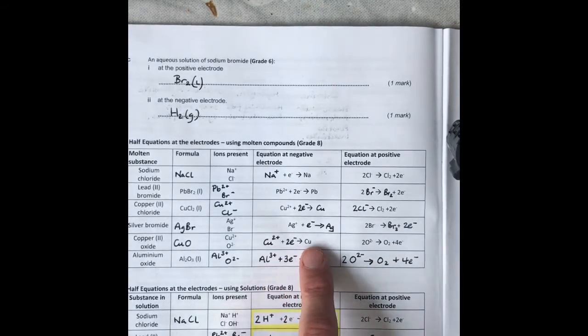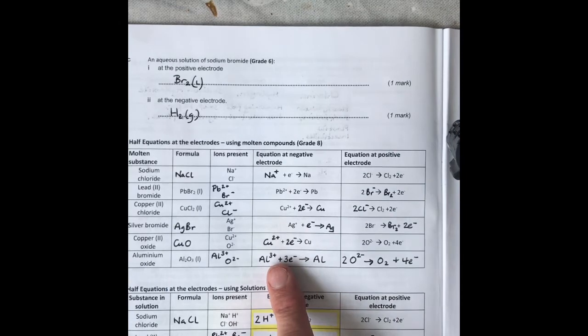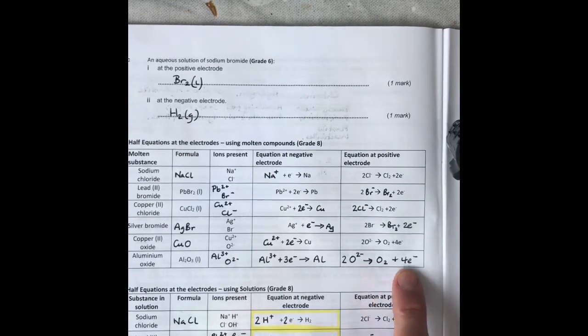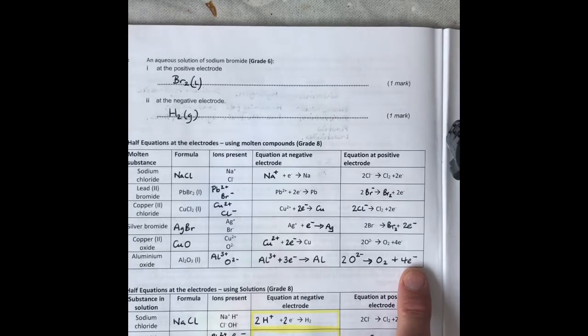Copper gains two electrons to become copper, and aluminum gains three electrons to become aluminum metal. Oxygen ions form oxygen gas and lose four electrons.